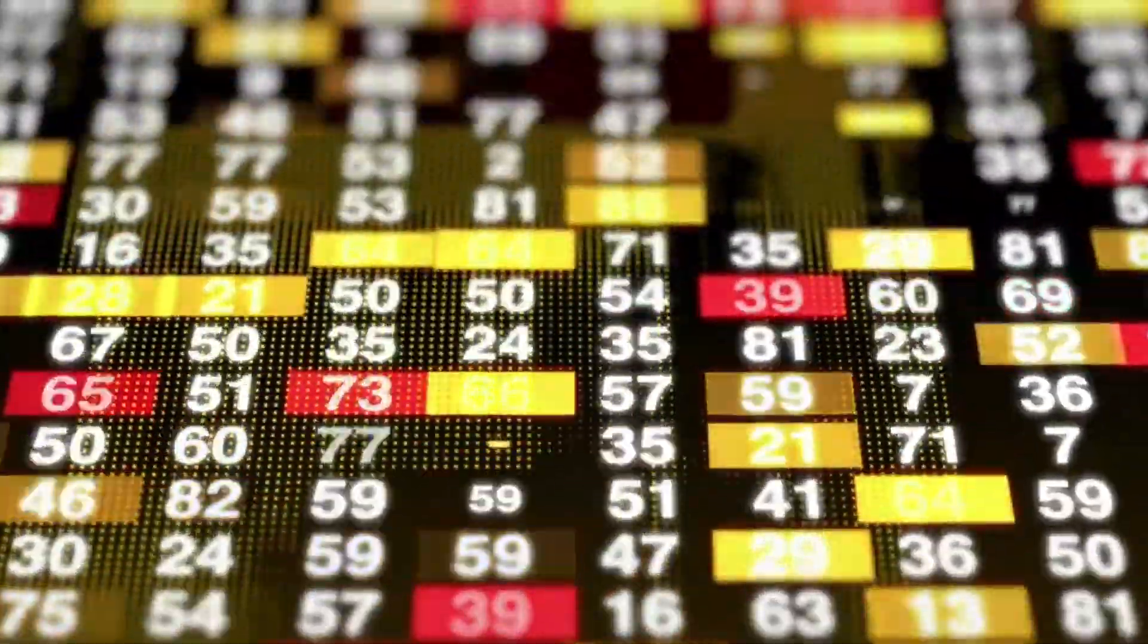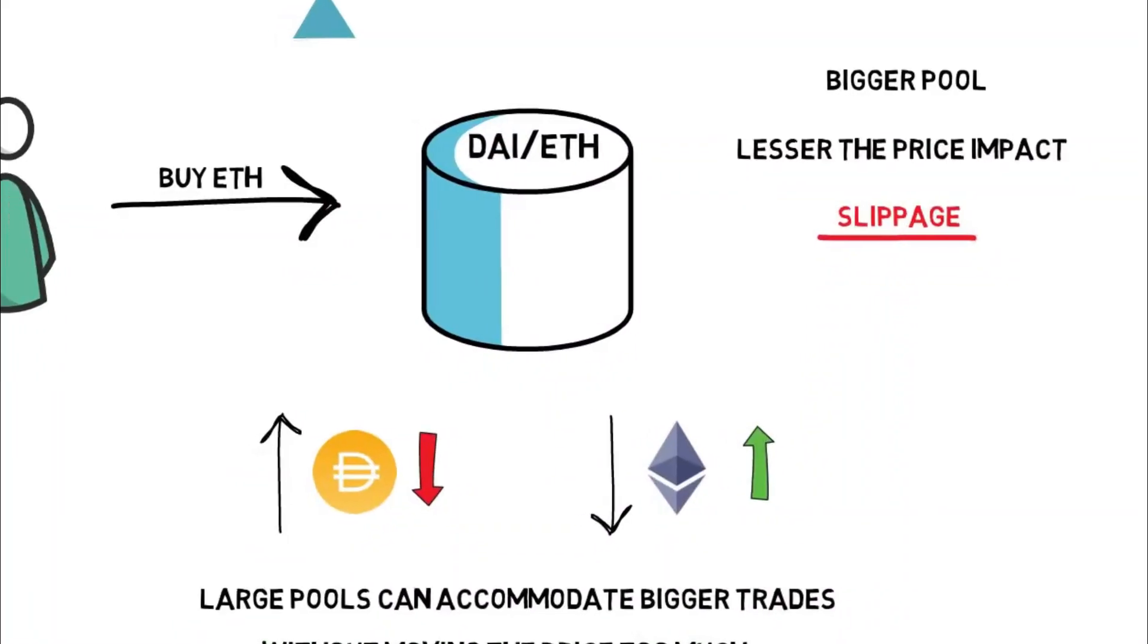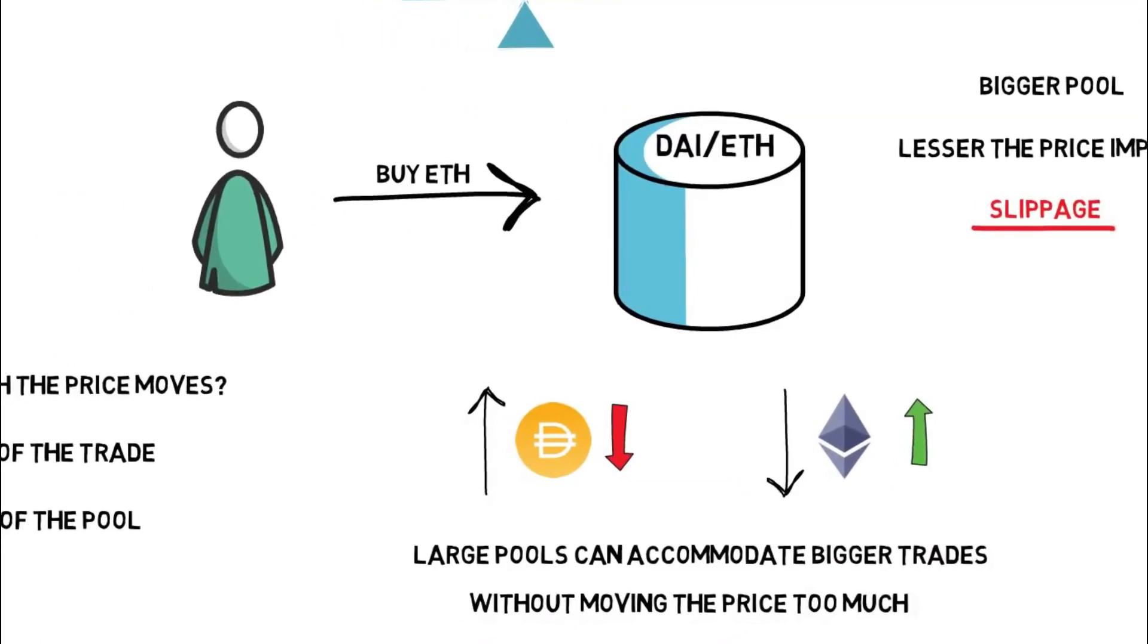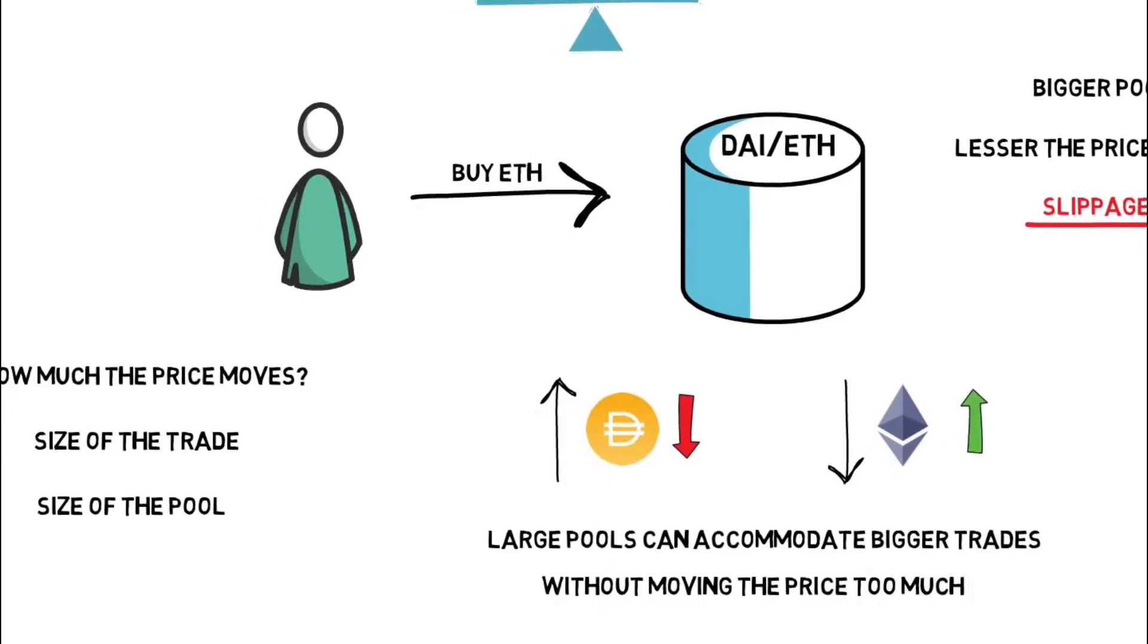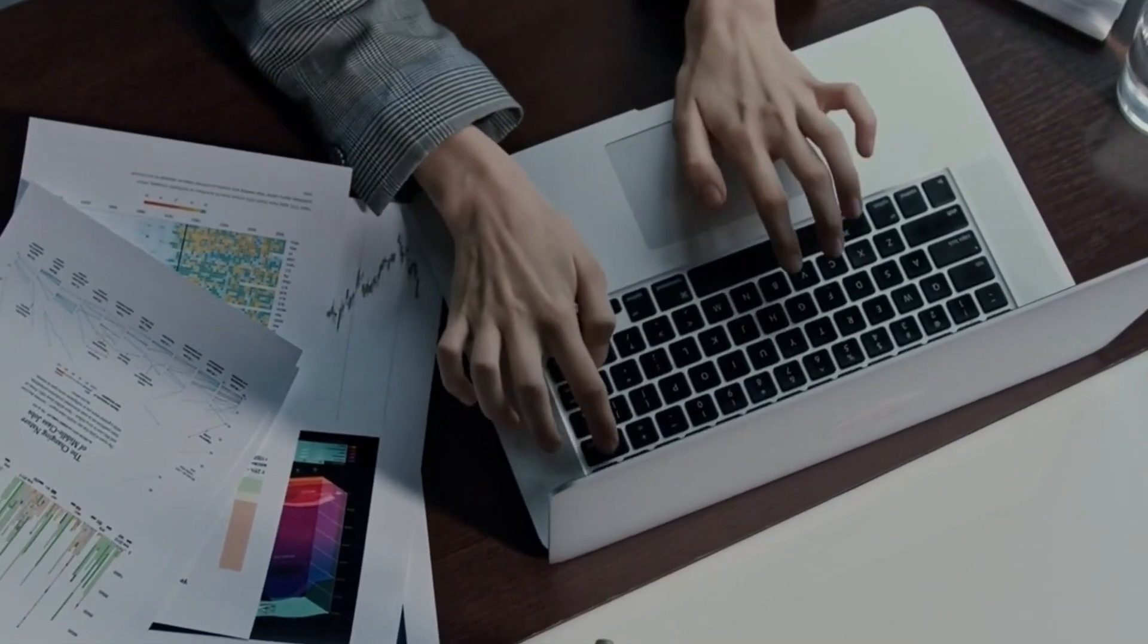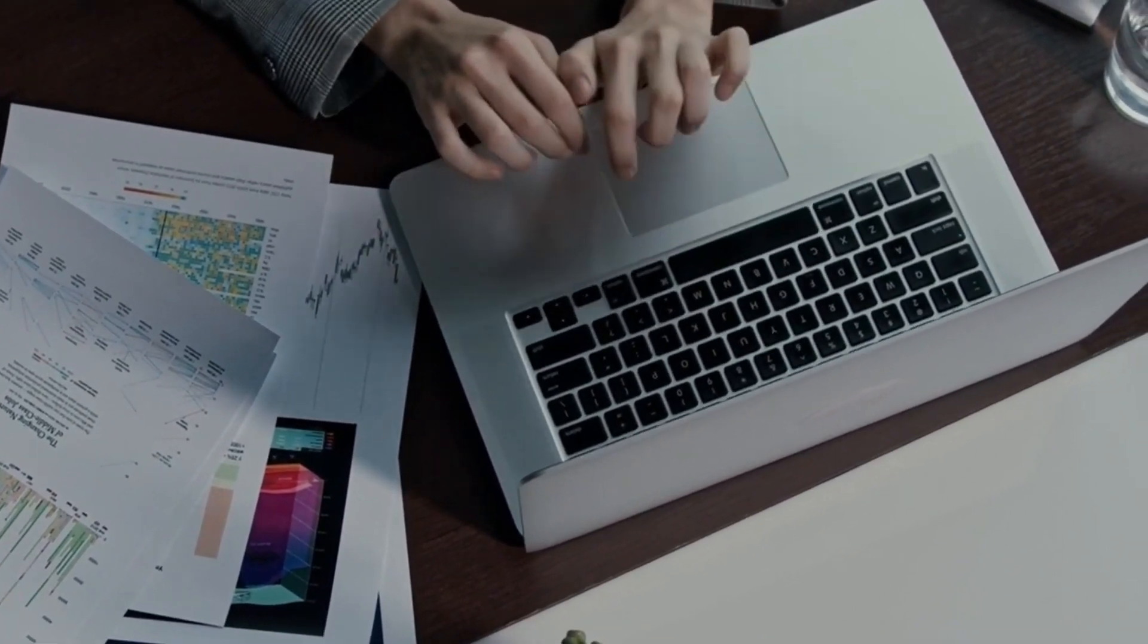Liquidity pools are a crucial part of the DeFi ecosystem, as they enable everything from DEXs to yield farming. Yearn and other liquidity mining protocols function as high-yield crypto savings accounts, making it simple to produce money from long-term crypto ownership.